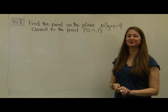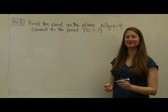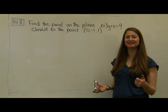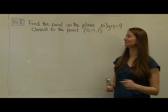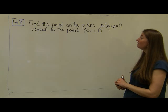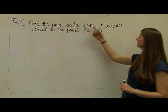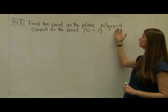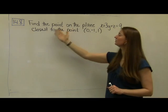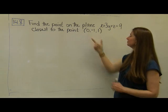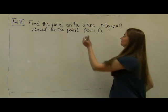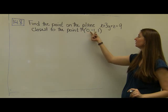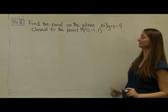For our final example, we're going to revisit a problem that you've seen before. Our problem is to find a point on the plane given by the equation x plus 3y plus z equals 9, and we want to find the point that is closest to the point P, which is equal to 0, negative 1, 1.